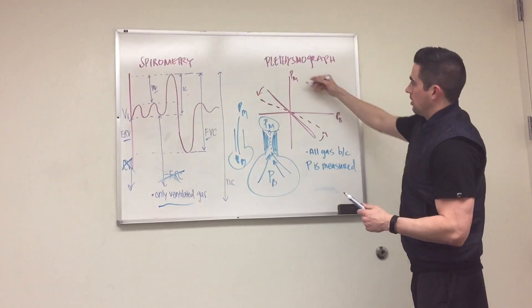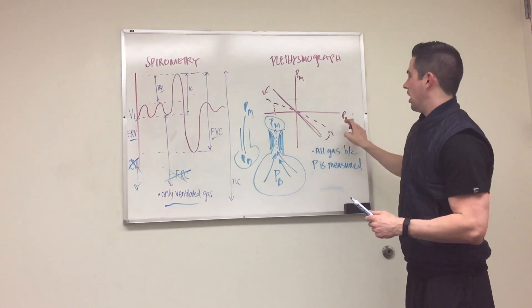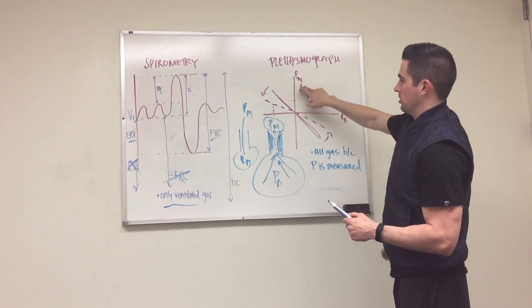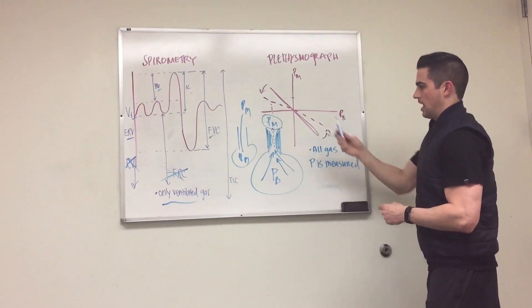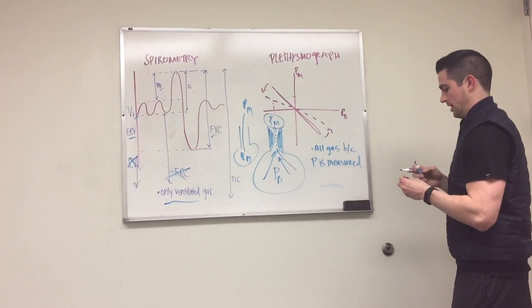The reason why is, at a certain pressure in the mouth, it'll take a greater pressure in the body in order to achieve that pressure in the mouth. This, once again, is because some of the pressure in the body is being used to compensate for the resistance.